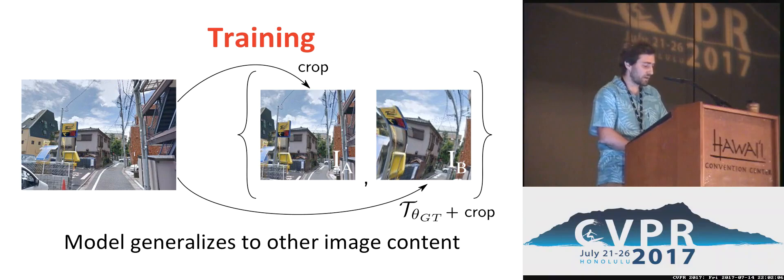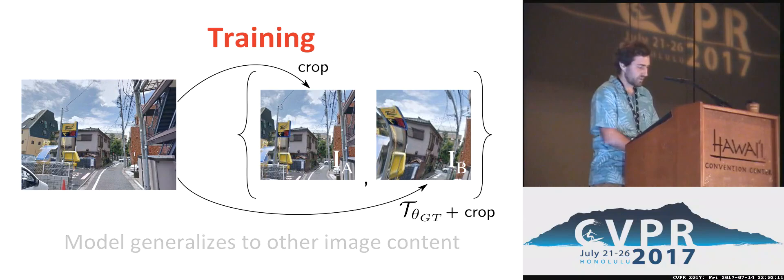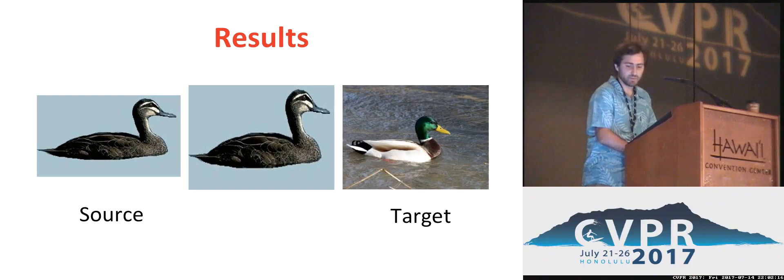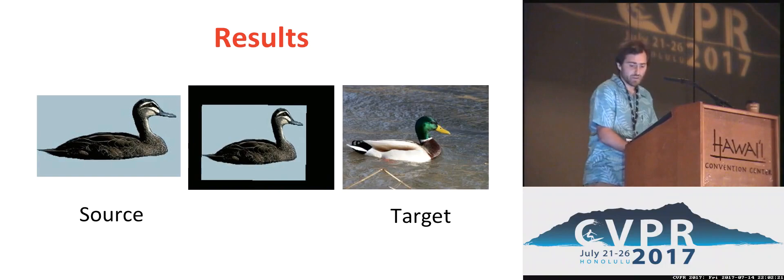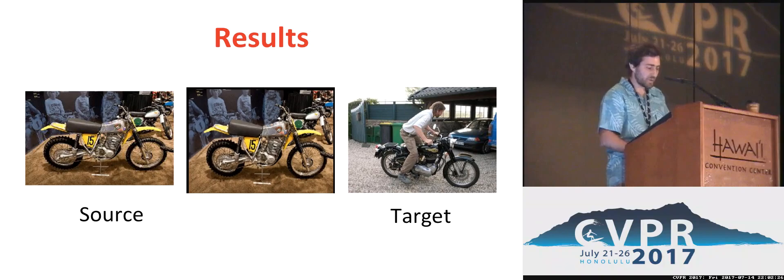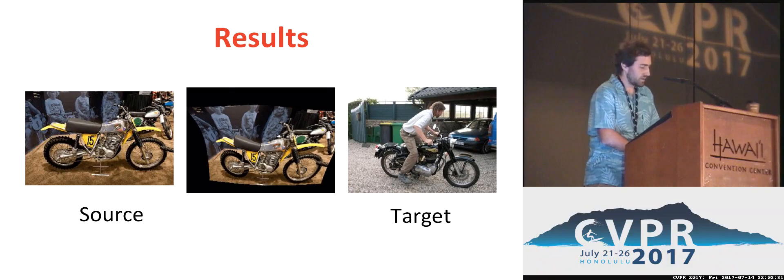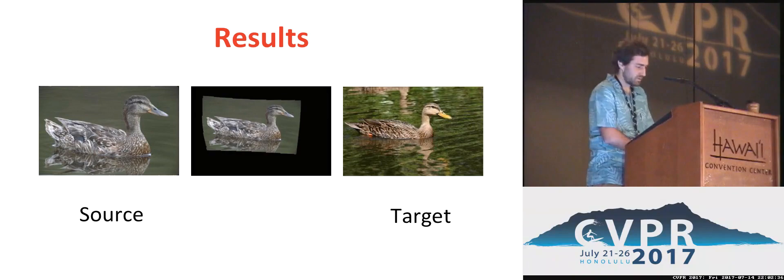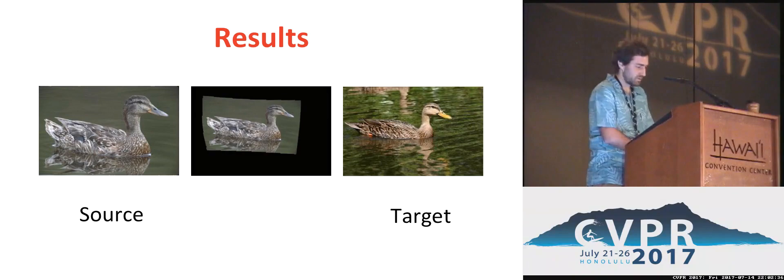As we can see in these results, on the left and right are the source and target images, and in the middle is the result of applying first a coarse alignment and then a fine alignment. Our method can cope with large appearance differences and background clutter. It also copes well with scale changes, and moreover it can cope with a certain amount of rotation as well.